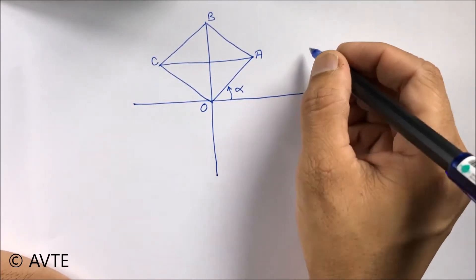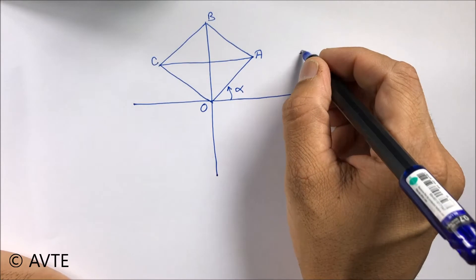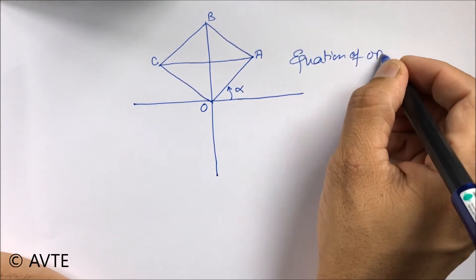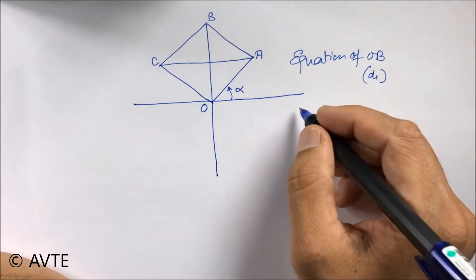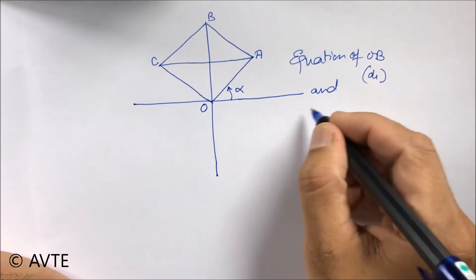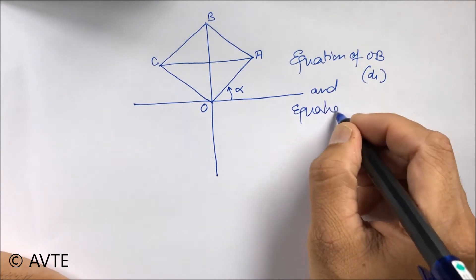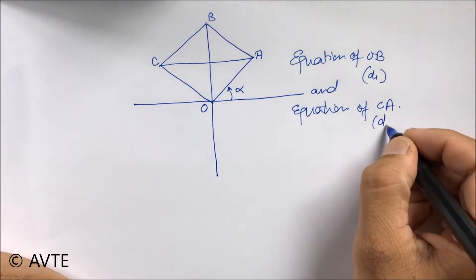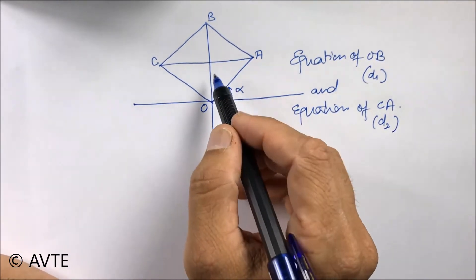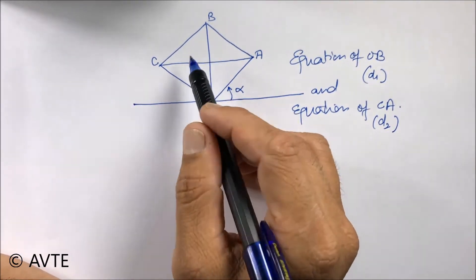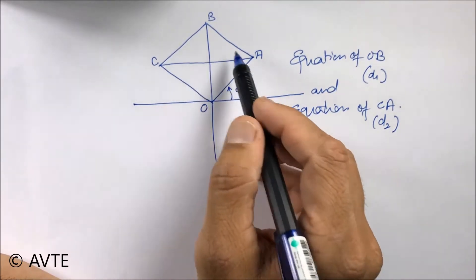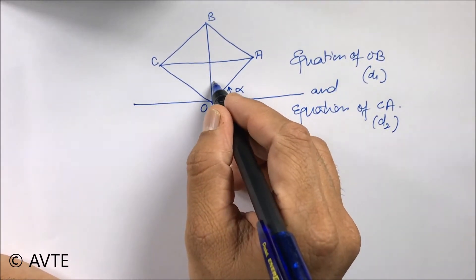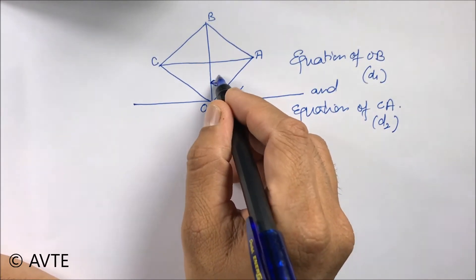If I take this as O and this as A and B and C, the target is to find the equations of OB, that is the first diagonal d1, and also the equation of CA, this is diagonal two. Now we know that the diagonals are at 90 degrees, so this will be 45, this will be pi by 4.